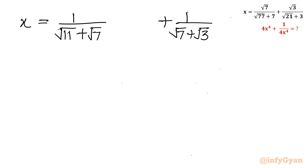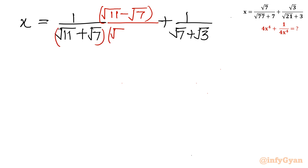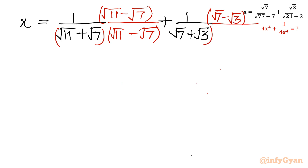Now I will rationalize the denominator. I will multiply the first term by (square root 11 minus square root 7) over (square root 11 minus square root 7), and multiply the second term by (square root 7 minus square root 3) over (square root 7 minus square root 3).